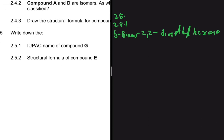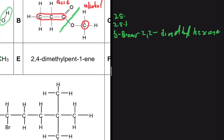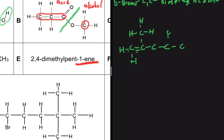The last question asks for the structural formula of compound E: 2,4-dimethylpent-1-ene. 'Pent' means five carbons: one, two, three, four, five. The double bond is on carbon one (from 'pent-1-ene'). On carbon two there is a methyl branch, and on carbon four there is another methyl branch. We then fill in the remaining hydrogens to complete the full structural formula.